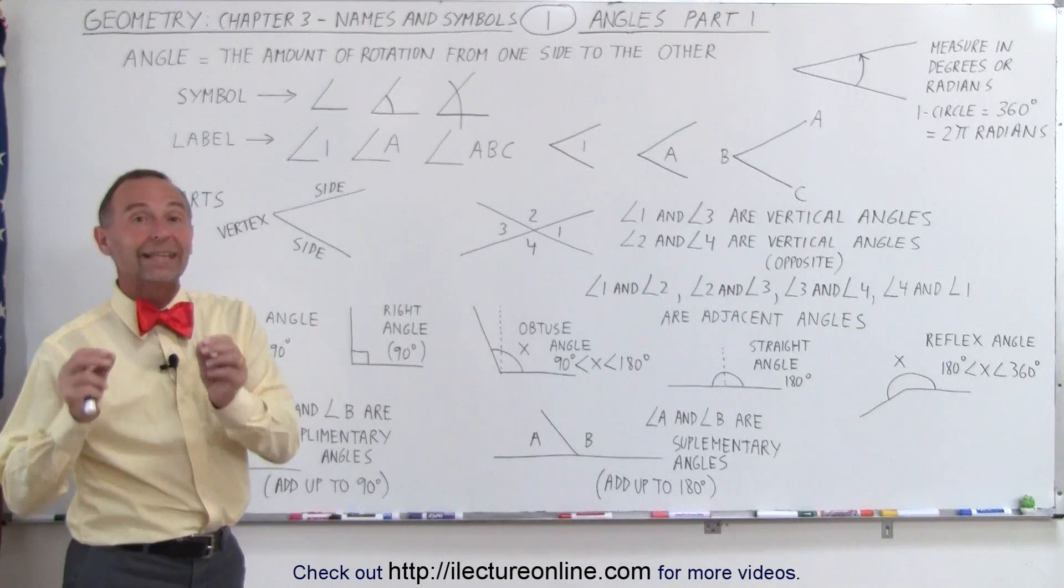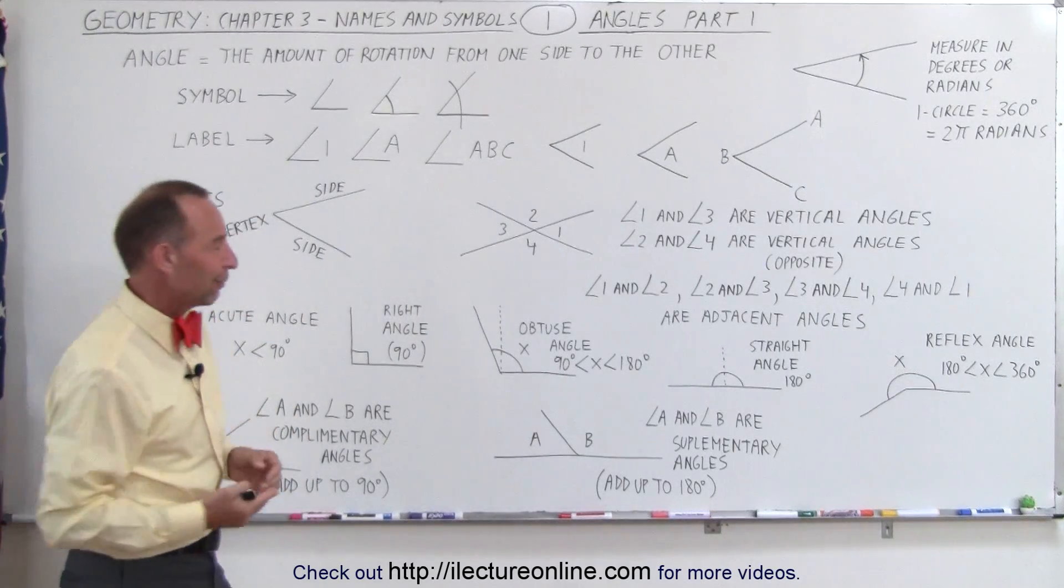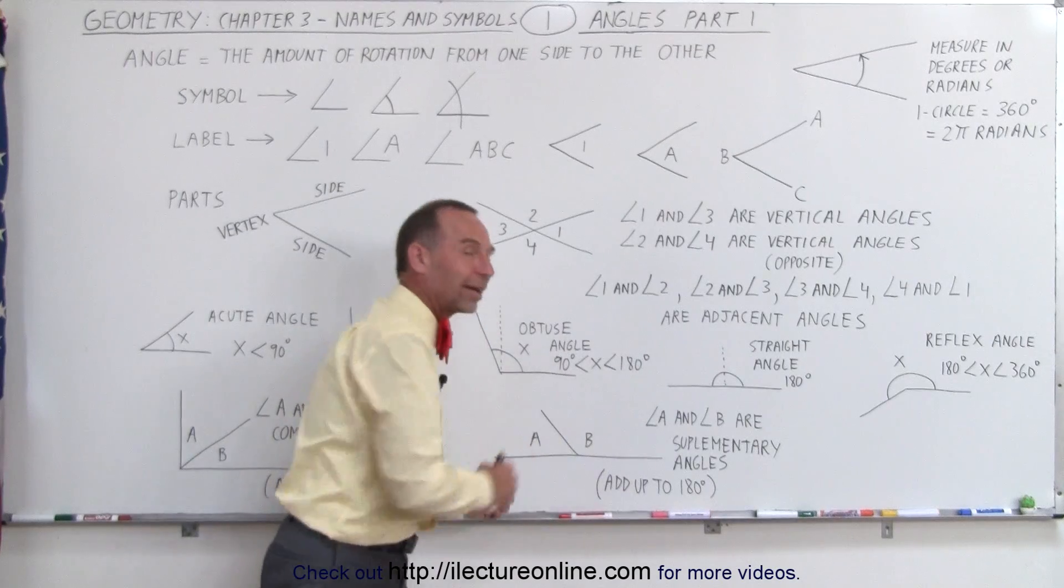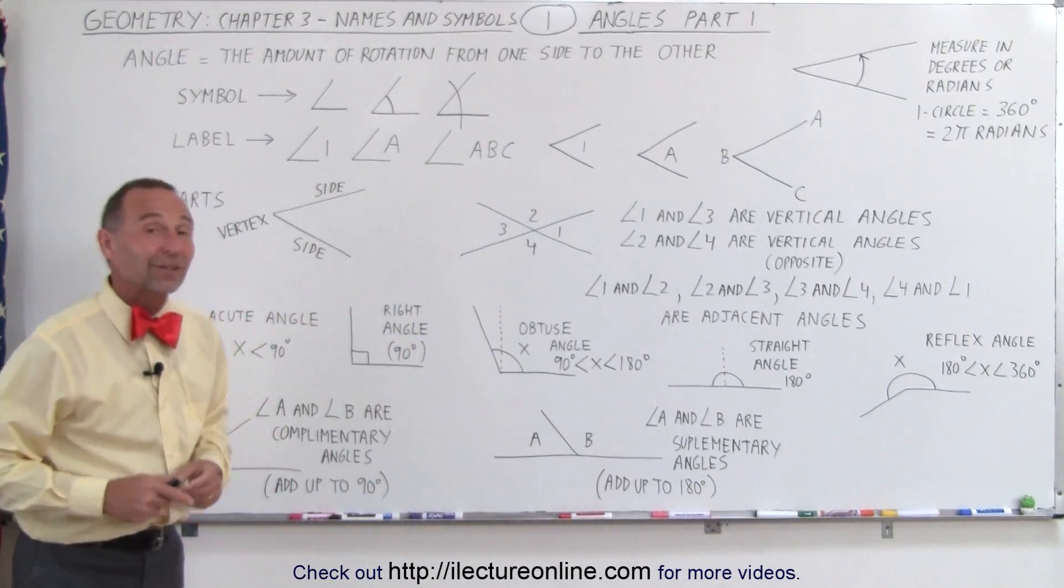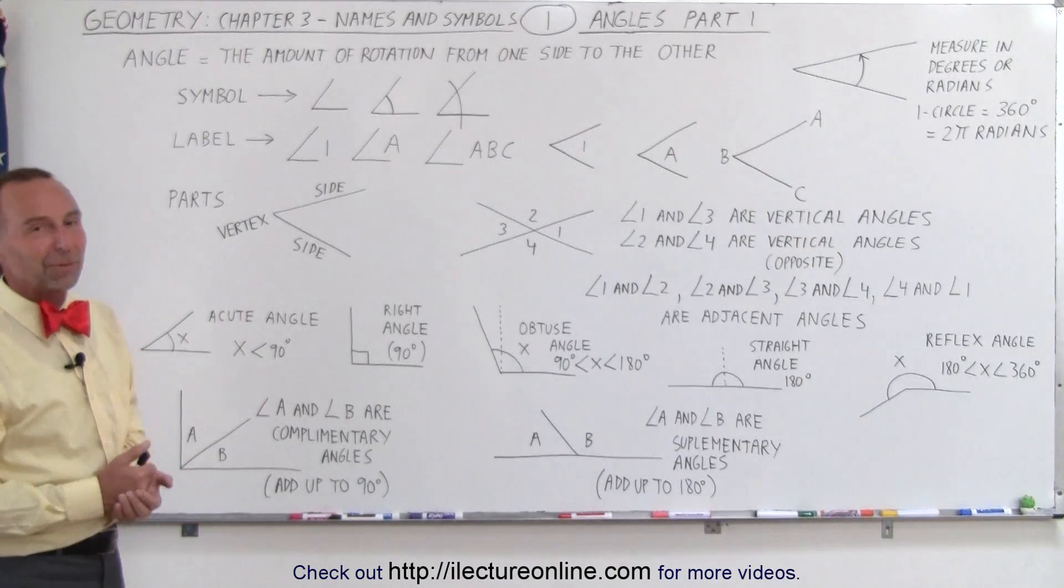So from now on, I just have to think, C comes before S, therefore that is associated with the 90 degree sum, and S comes after, and therefore it's associated with the larger angle, 180 degrees. So that's how I remember the difference between complementary and supplementary.